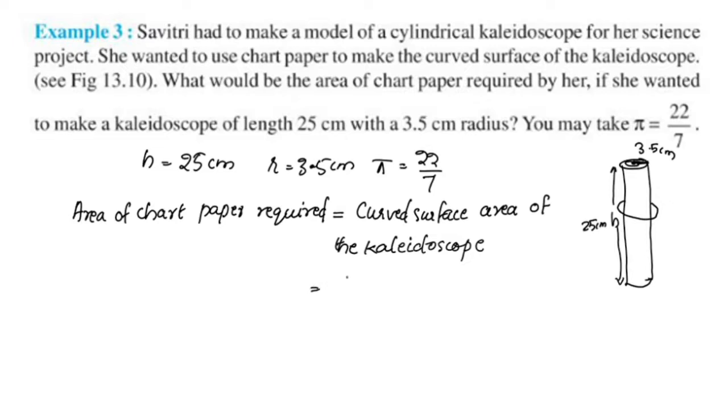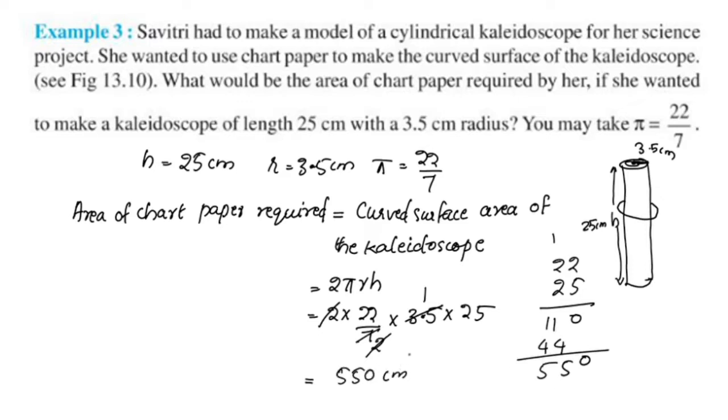The area of chart paper required equals 2 pi r h. 2 pi is 22 by 7 into r, r is 3.5, into h, h is 25. So 22 by 7 times 3.5 times 25. Five twos are 10, two twos are 4. This equals 550 centimeter square.